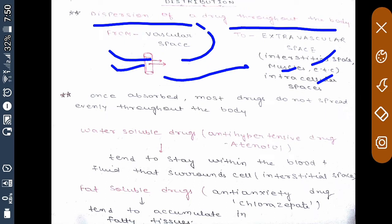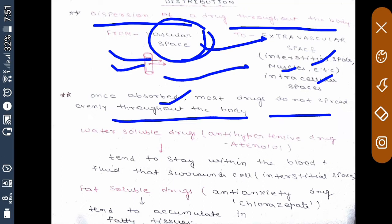One important point: once drug is absorbed, most drugs do not spread evenly throughout the body due to many reasons. Taking examples of water-soluble drugs such as antihypertensive drug atenolol, they are water-soluble drugs.